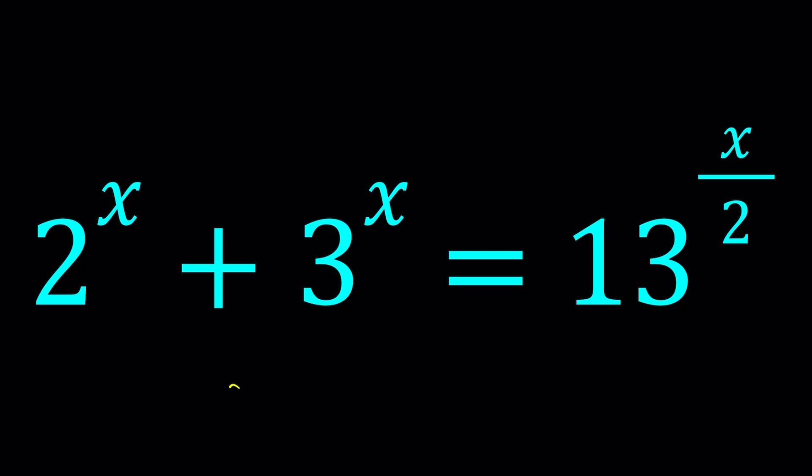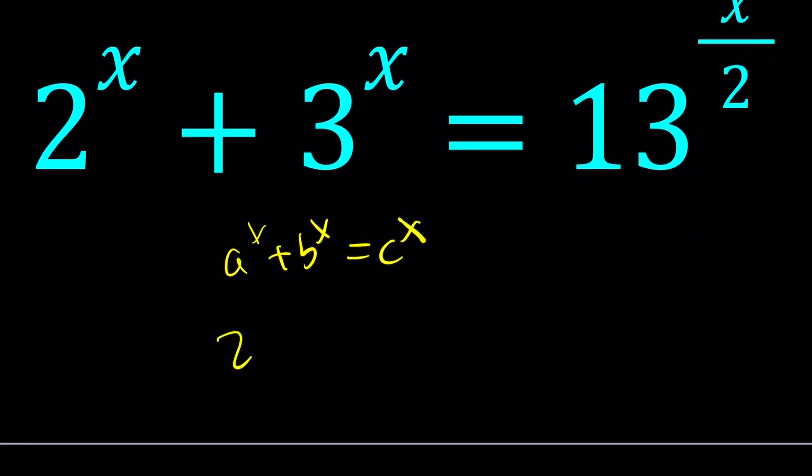When we have something like a to the x plus b to the x equals c to the x, these numbers are usually related in a special way. Especially if this comes up in a math competition or olympiad, there must be some special relationship. Otherwise, if I give you an equation like 2 to the x plus 3 to the x equals 7 to the x, this may not be possible to solve by algebraic method.